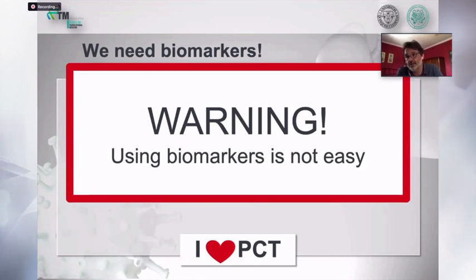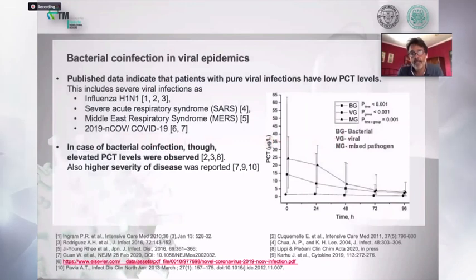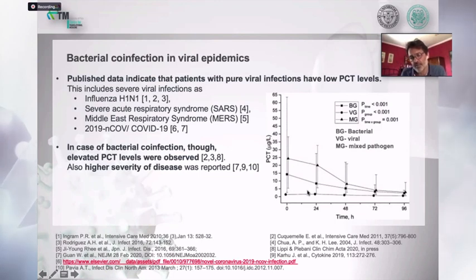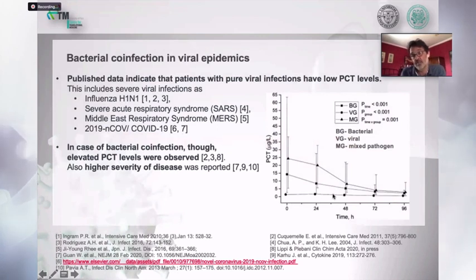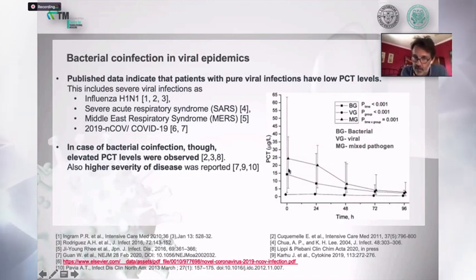What do we know about PCT and viral pneumonia in general? There are several publications starting from the H1N1 epidemic, SARS, MERS, and so forth. Within the first one or two days there is a clear distinction: patients with pure viral pneumonia have very low PCT levels, those with bacterial pneumonia have higher PCT levels, and those with mixed viral and bacterial infections have statistically significantly higher levels of procalcitonin. However, when you look at the error bars, there is a huge overlap.